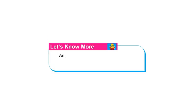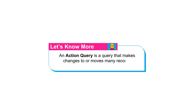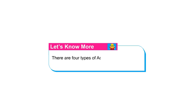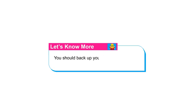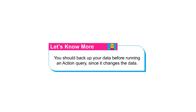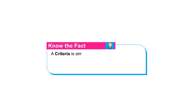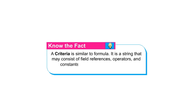An action query is a query that makes changes to or moves many records in just one operation. There are four types of action queries: Append, Update, Make Table, and Delete. You should back up your data before running an action query since it changes the data. A criteria is similar to a formula — it is a string that may consist of field references, operators and constants. Query criteria entry is also referred to as an expression.